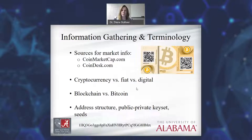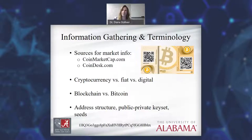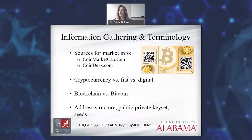Understanding the difference between the terms cryptocurrency, fiat, and digital are really important. Fiat currency is just currency that's backed by a federal government — the US dollar, the Russian ruble, the Canadian dollar. These are our fiat currencies; they're stable, they give us confidence in the system, and this is how we've operated for a long time. The digital form of currency is just fiat in a digital medium, so think about platforms like Venmo and Apple Pay.